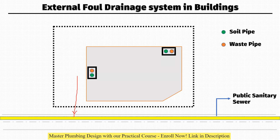For example, this is your soil pipe and this is your waste pipe. The soil pipe will be connecting to a manhole placed somewhere outside the building. As per different standards, this distance should not be more than two meters. The soil pipe — which carries human excreta — goes directly to the manhole. The waste pipe does not go directly; in between we have a gully trap. The wastewater goes to the gully trap first, then from the gully trap it goes to the manhole.